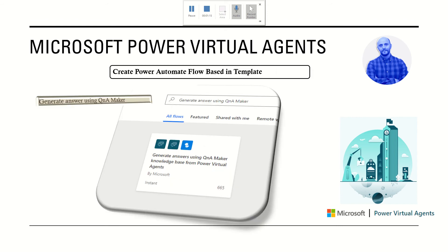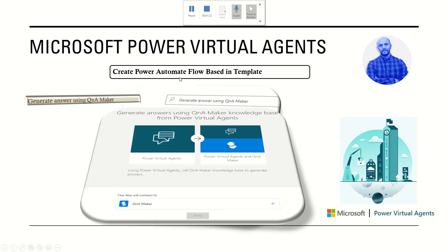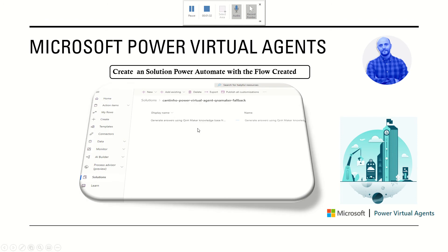So after that, we have everything in Power Virtual Agents. We will create a Power Automate flow based on a template, and the template name is 'Generate answer using QnA Maker.' We will also create a solution in Power Automate with the flow created, so we will put the flow in our solution.